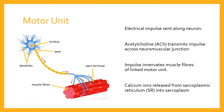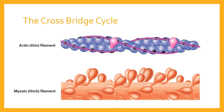To briefly recap the cross-bridge cycle: we have two filaments that slide past one another to produce movement in the muscle. The myosin filament — the thicker filament — has heads that reach up and bind to the actin filament under certain circumstances. Once they're bound, the myosin thick filament moves the actin filament with respect to itself, so they slide past one another. But that can only happen under certain conditions.